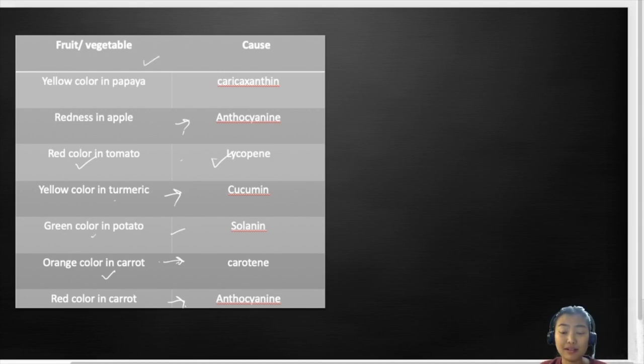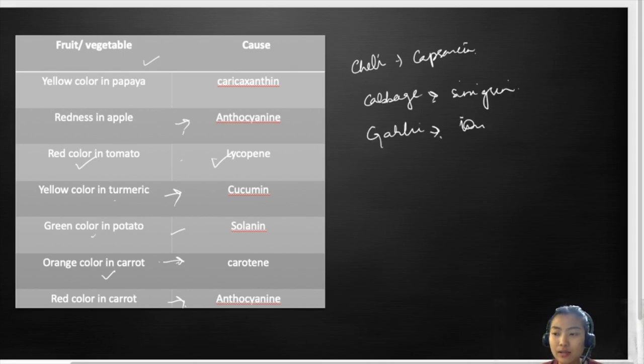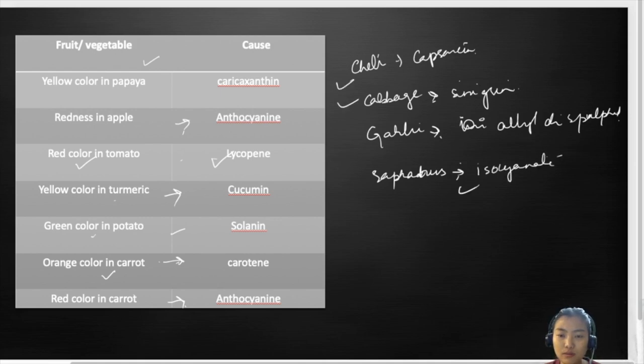In the same way that we have for the color, there are chemical compounds or causes for its pungency as well as the bitterness. So it might be like in chili, we have capsaicin. We have for cabbage, the pungency may be due to sinigrin. And in garlic, we have diallyl disulfide. And for maybe roughness, we have isocyanate. Try to remember the causes for all the pungency in these vegetables as well as in the fruits.